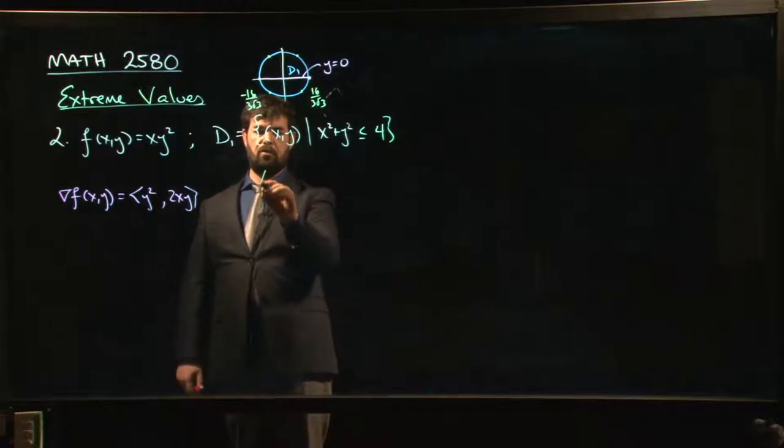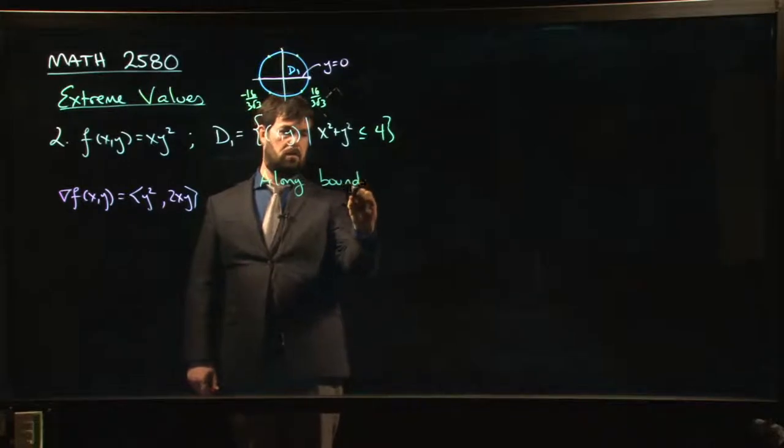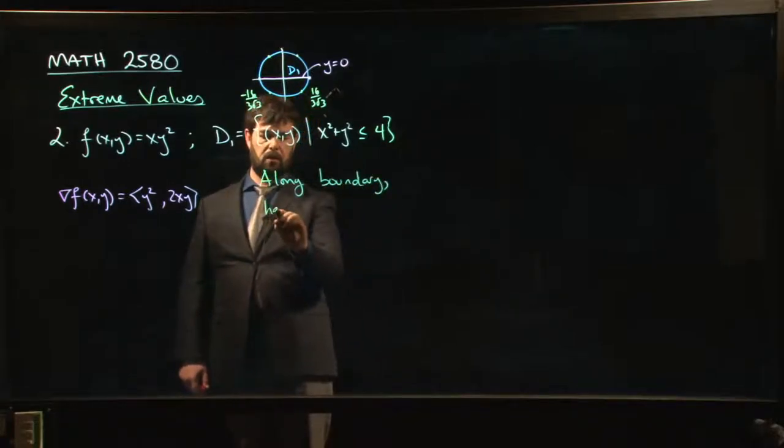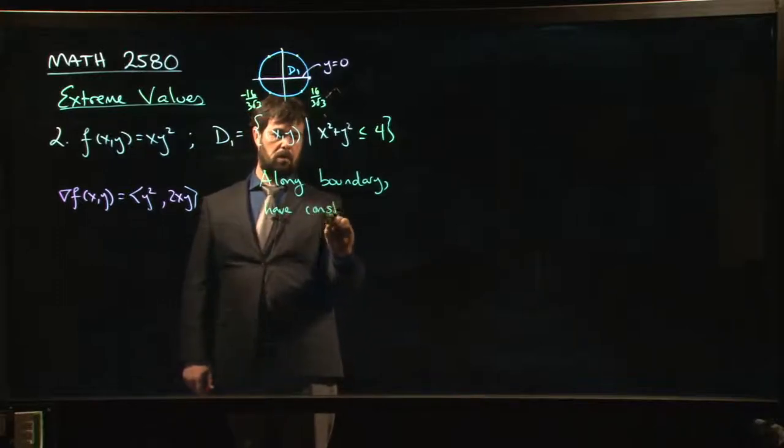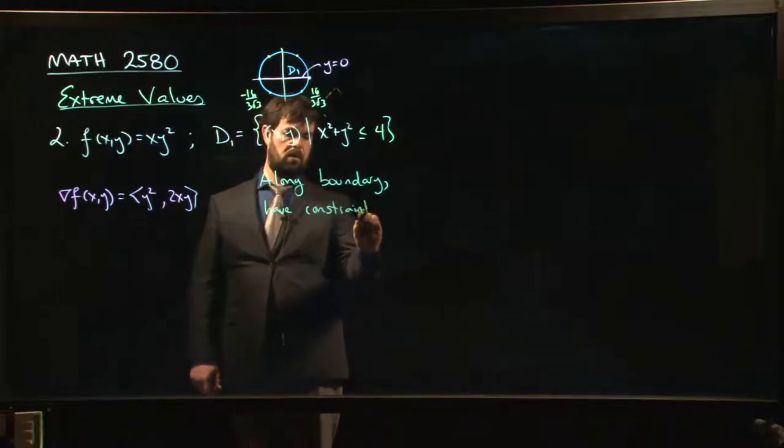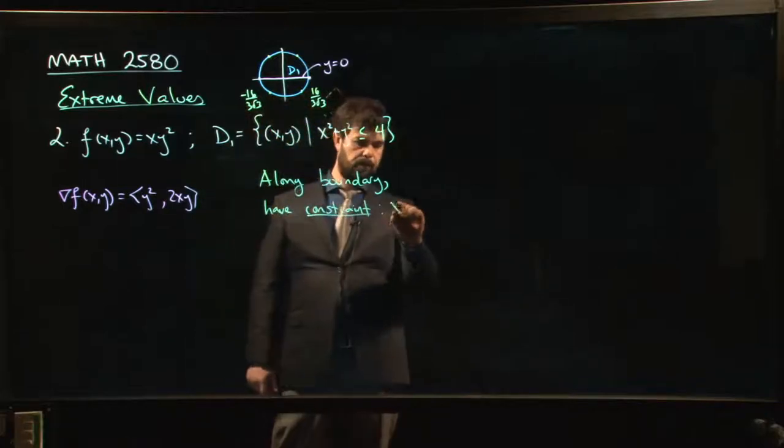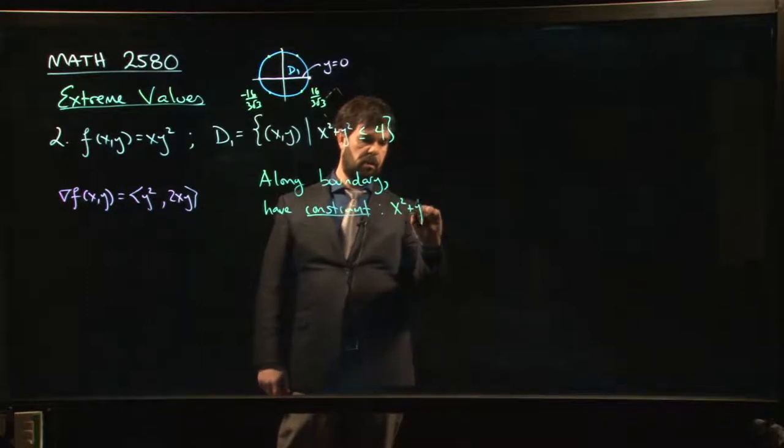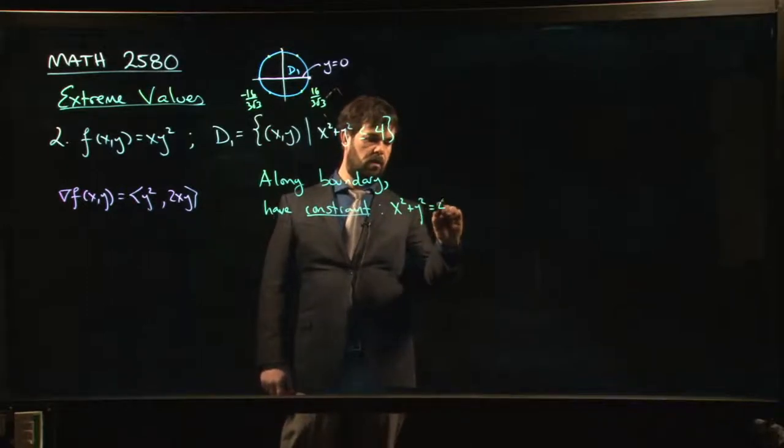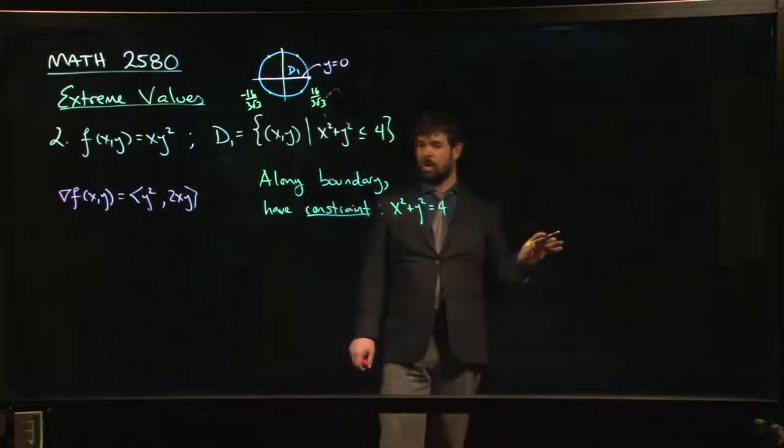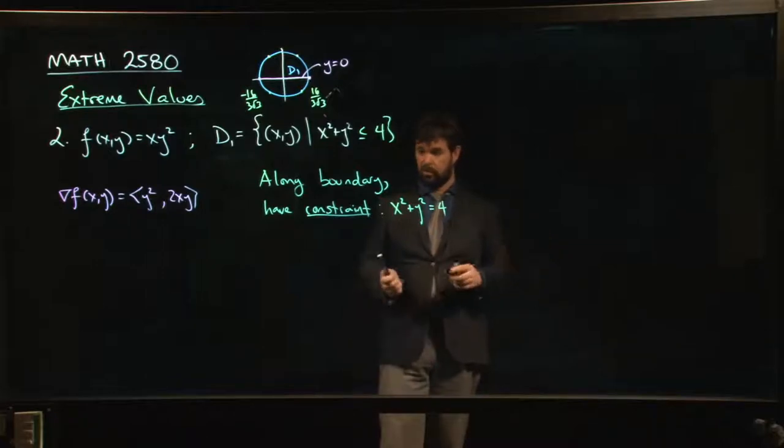Along the boundary, you have this constraint. We can think of it this way: we have a constraint, and our constraint is that x squared plus y squared has to equal 4. Now, we can actually solve this one with Calc 1 methods. Strangely enough, we can.